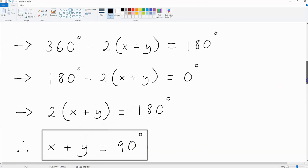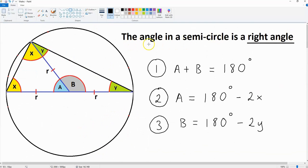So there we have it, our proof. We've shown that the angle in a semicircle is a right angle. x plus y over here is equal to 90 degrees.